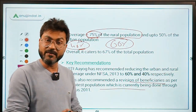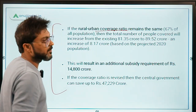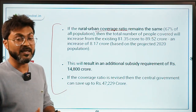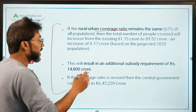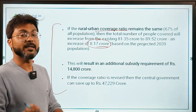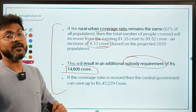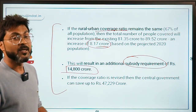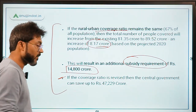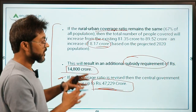The significance of this recommendation: if the rural-urban coverage ratio remains the same at 67% of the total population, it may add around 8.17 crore more beneficiaries, leading to an increase in subsidy requirement of around ₹14,800 crores. However, if these recommendations are accepted, the government will be able to save ₹47,229 crores.